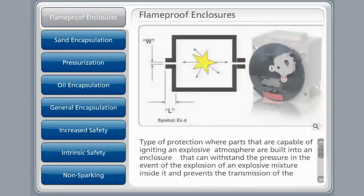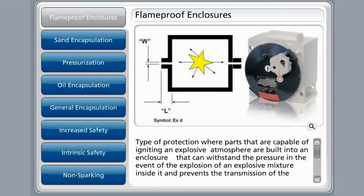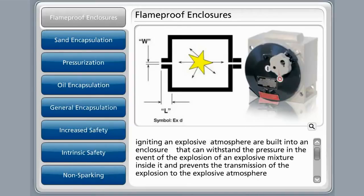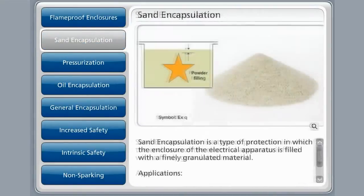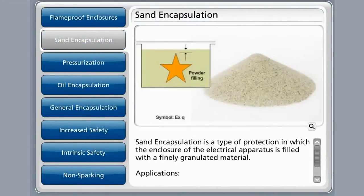The flame-proof method is a type of protection where devices capable of igniting an explosive atmosphere are built inside an enclosure. This protective method prevents the transmission of the explosion to the external atmosphere surrounding the enclosure. This method would be suitable for applications on power-operated equipment, switchgear, motors, and any equipment that produces an ignition source during normal operation.